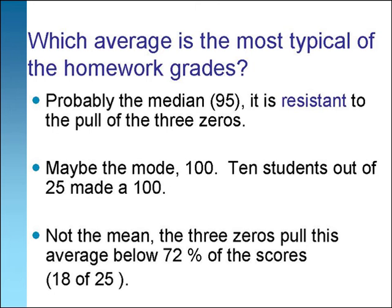When data is skewed as this data is, the median is more typical of all the scores. It is resistant to being pulled away from the center. Here the mode is also good since so many students had a score of 100. The mean which many of us would naturally choose is below 72% of the scores. It is not typical and misrepresents the performance of this class.